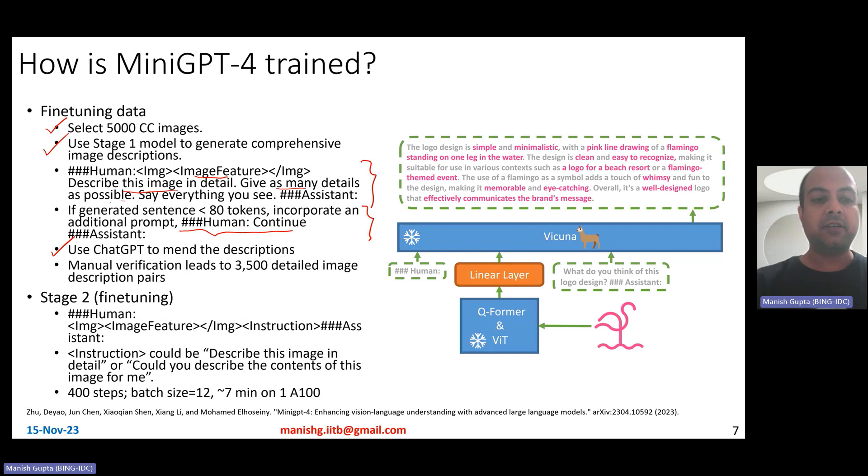And lastly, to make sure that the quality of this dataset, fine-tuning data is really good, they manually verify the quality, leading to a final 3500 sized detailed image description dataset. Now, this is such a small dataset, you see? So they use this small dataset for fine-tuning.